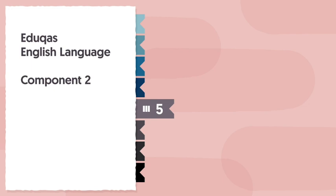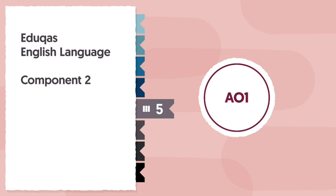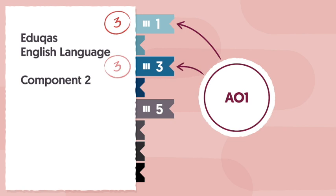In this video we're going to talk through how to approach EDUQAS English Language Component 2 Question 5. This question will test you on Assessment Objective 1, an AO which has already appeared twice in this exam paper, in Question 1 for 3 marks and Question 3 for 3 marks.